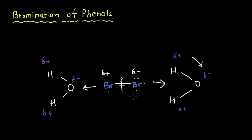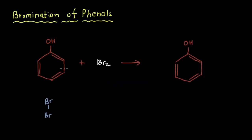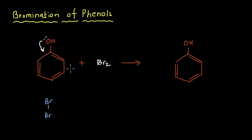Now let's see how the bromination takes place. We already know something about phenol — the oxygen has lone pairs of electrons that it is going to add to the ring, thereby activating it. When we break the double bonds and draw the resonance structures, the electron density is higher at the ortho and the para positions, which is why the OH group is called an ortho-para directing group.